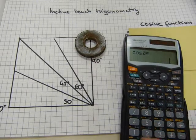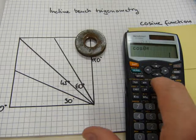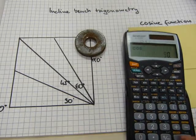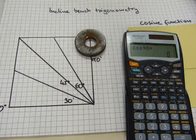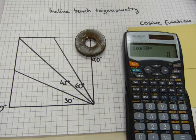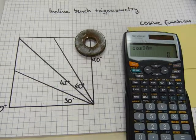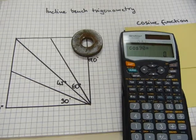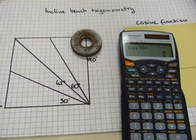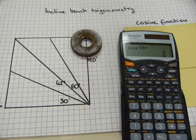If you enter cosine ninety—cosine ninety—that equals zero. Zero percent of your chest muscles, for example in this comparison, are engaged in ninety degree bench work.